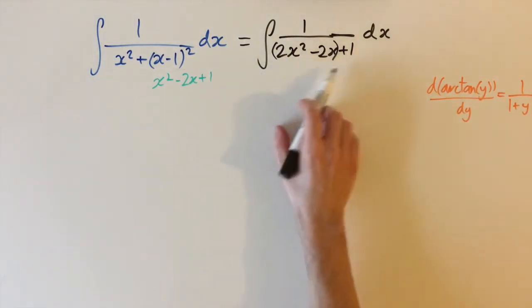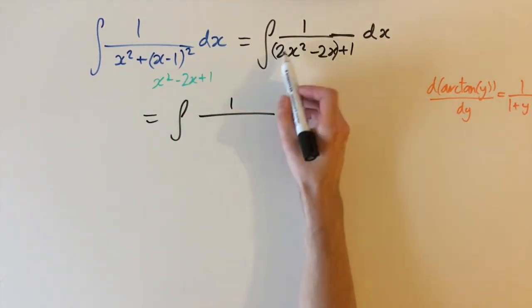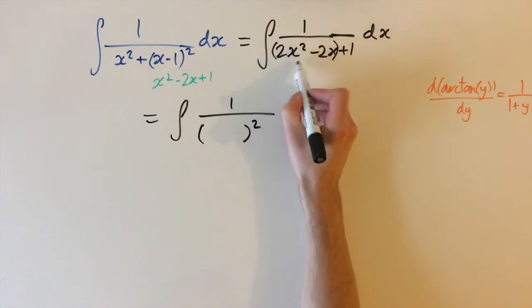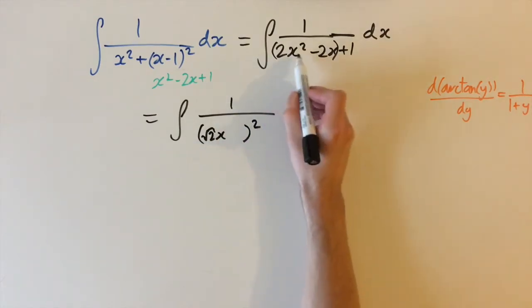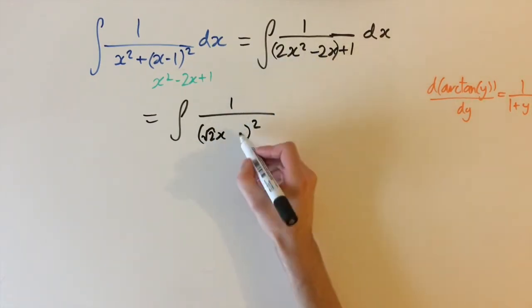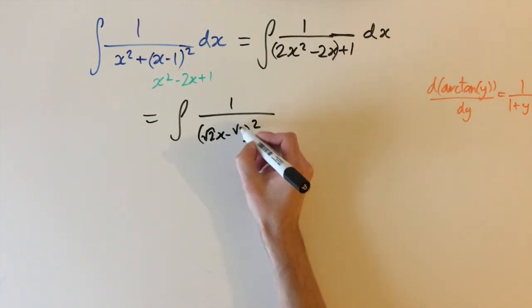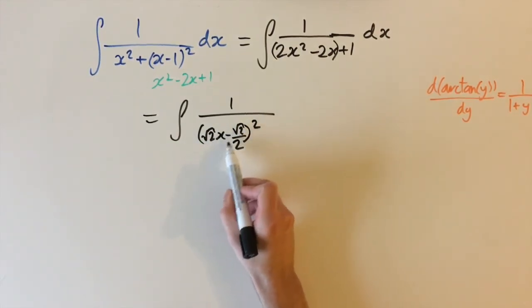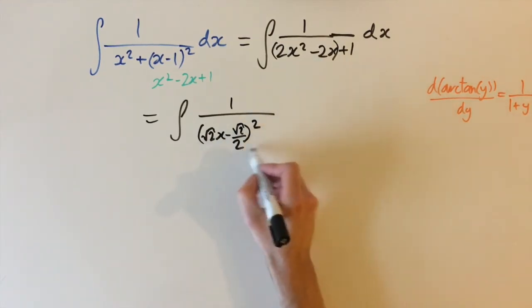Our approach is to complete the square on the bottom. This is the same as the integral of 1 over, we want to get this as a squared term and we want an x term, but we have 2x squared, which means we need the square root of 2x in here. We also need a constant that when we expand it out, we get minus 2x. That would be the square root of 2 over 2. If we expand this out, we'd get square root of 2 times minus square root of 2 over 2, which is just 1, so we get 2 of those terms giving us minus 2x.